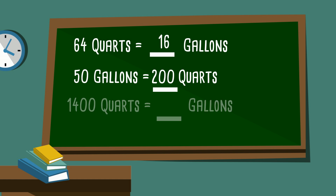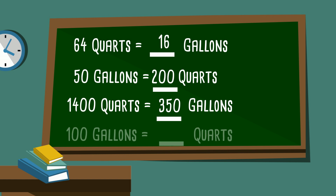1,400 quarts equals how many gallons? That would be 350. And 100 gallons equals how many quarts? That would be 400.